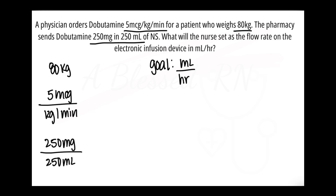The goal tells us we need milliliters on top, so we always start with what we're looking for. This puzzle piece has milliliters in it, so I'm going to flip it so that it's first and on top: 250 milliliters over 250 milligrams. Next, we need to get rid of the milligrams because they aren't part of the goal.